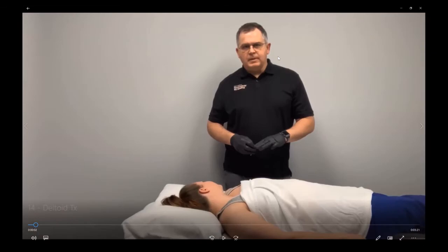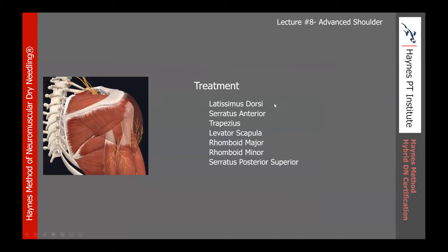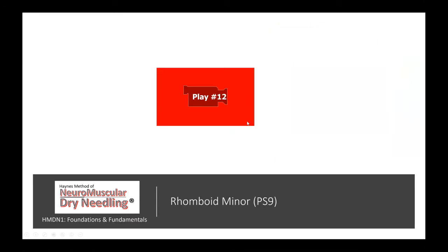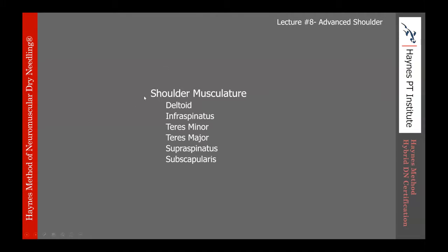We've just gone through the treatment for the posterior CT junction. We did the anterior torso and now the CT junction treatment. Let's come down now to musculature of the shoulder — deltoid, infra, supra, teres minor, major, and subscap. Deltoid is a main mover of the shoulder itself, with the rotator cuff being our stabilizing mechanism.